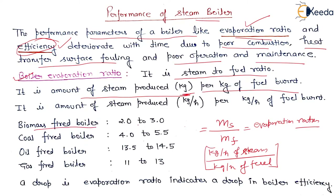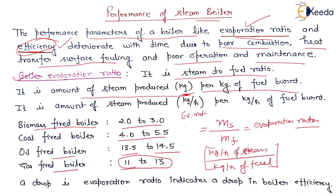Biomass-fired boilers have an evaporation ratio of 2 to 3. Coal-fired boilers have an evaporation ratio of 4 to 5.5. Oil-fired boilers have an evaporation ratio of 13.5 to 14.5. Gas-fired boilers have an evaporation ratio of 11 to 13. If the evaporation ratio is more, it means more steam is being generated using less fuel, since evaporation ratio is directly proportional to mass of steam and inversely proportional to mass of fuel.